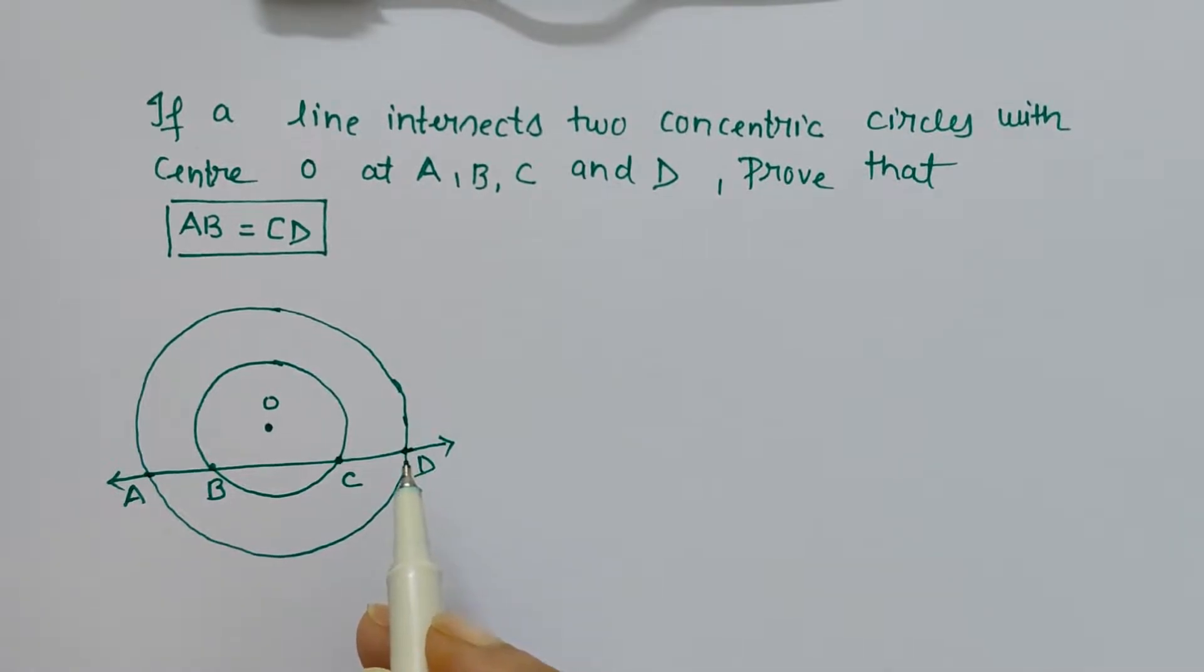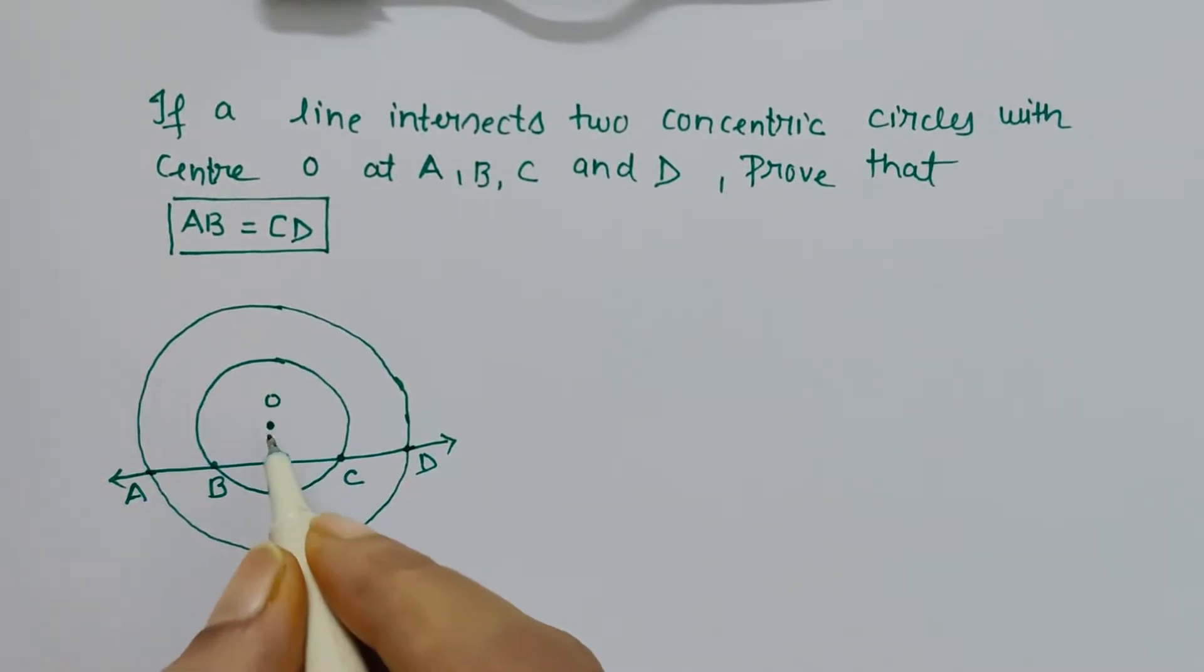Now, the properties I discussed in previous videos will be used here. If you remember, there's a property that says if a perpendicular line falls from the center of the circle, it will bisect the chord. BC is a chord for the inner circle.